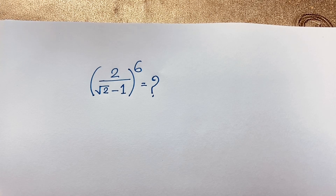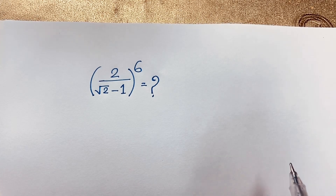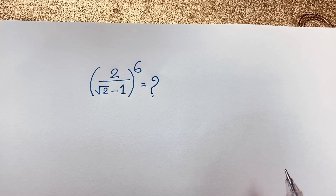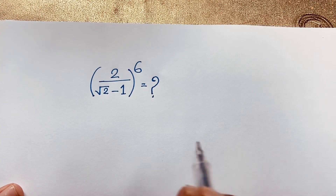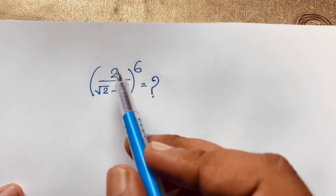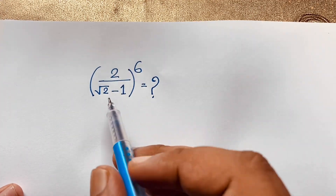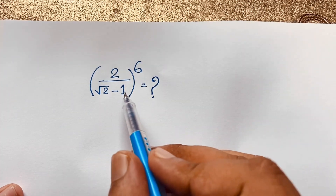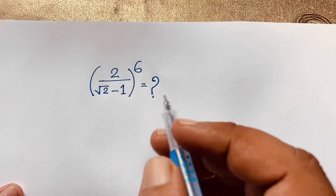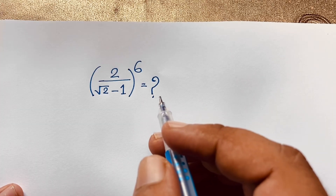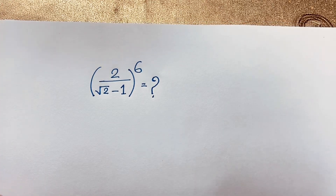Welcome to Russia's Classroom. Today we have an interesting math problem to solve: how to simplify this radical math question — 2 over (√2 minus 1), whole to the power 6, is equal to what?